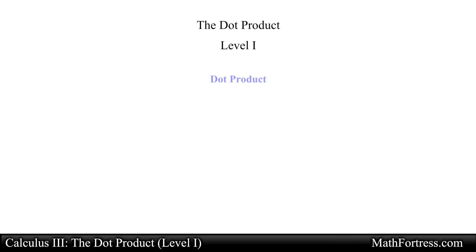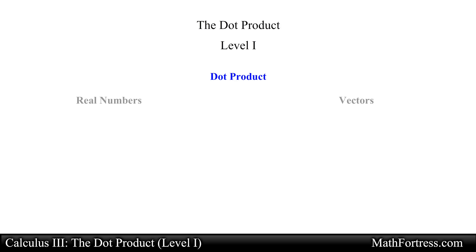The dot product, level 1. In this video we will define a new vector operation called the dot product, also known as the scalar product and sometimes referred to as the inner product. Defining vector multiplication is pretty tricky because vectors are not ordinary numbers, so ordinary multiplication is not directly applicable to vectors.